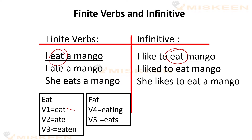Ab agle sentence mein jaate hain: I ate a mango — yeh sentence past tense mein hai. Yehaan par tense badal gaya hai aur verb bhi badal gaya hai — eat se ab yeh 'ate' ho chuka hai, jo V2 form mein hai. Lekin infinitive mein: I like to eat mango — yehaan par eat abhi bhi base form mein hi hai.